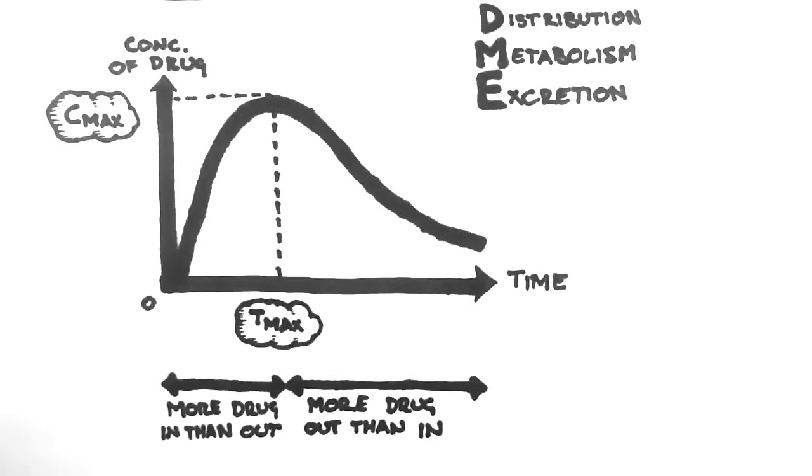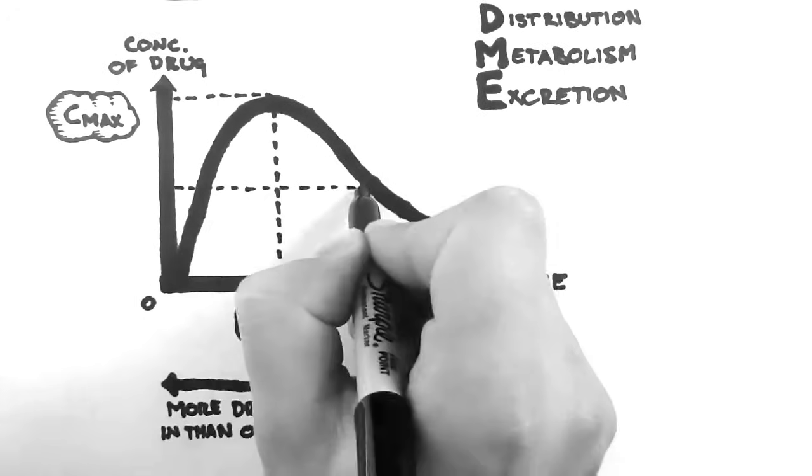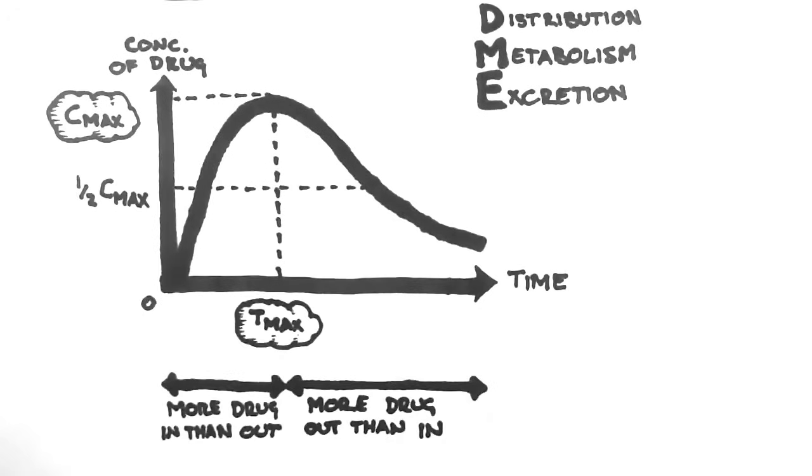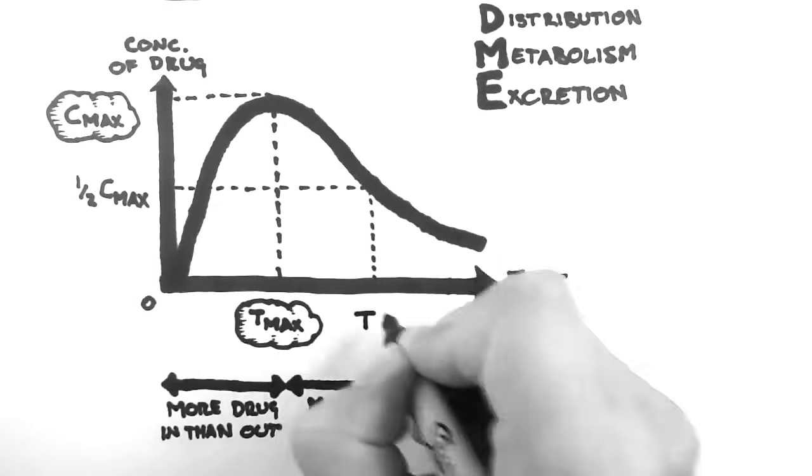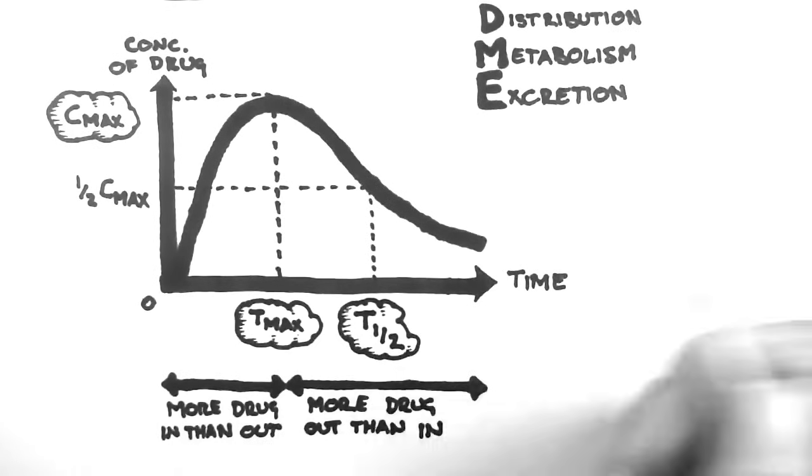If we begin at Tmax, we want to see how much time it takes for the concentration of the drug to decrease from Cmax to half of Cmax. So here is the half Cmax line here. And therefore, the half-life, which is often denoted T-half, is the time between Tmax and where I've drawn T-half here.